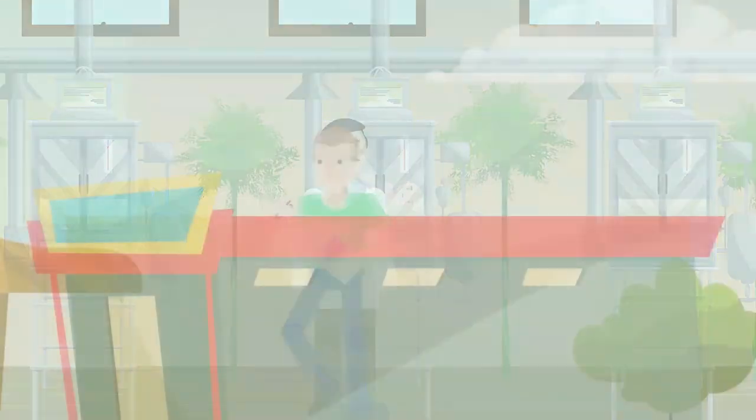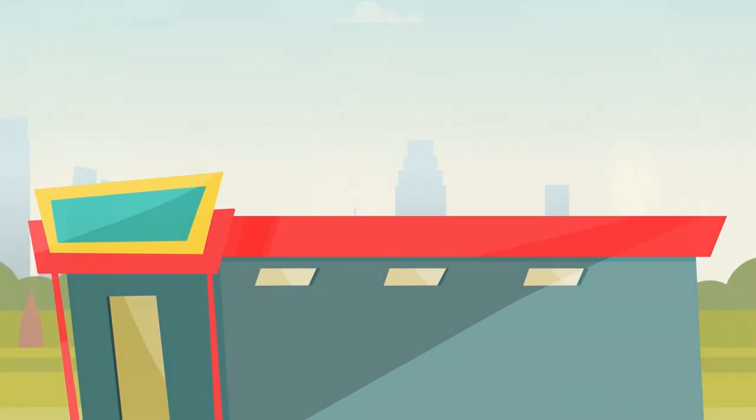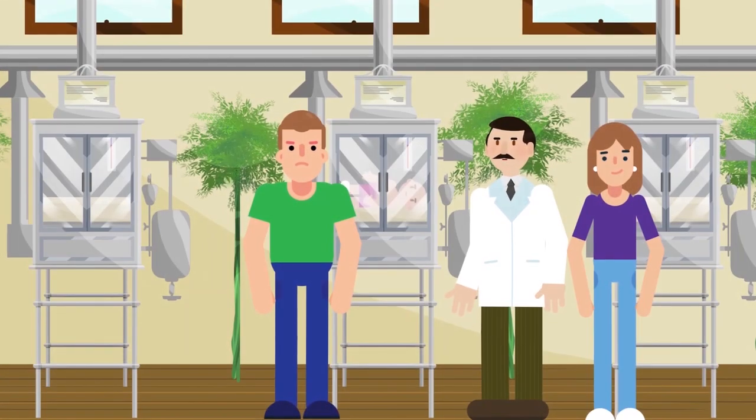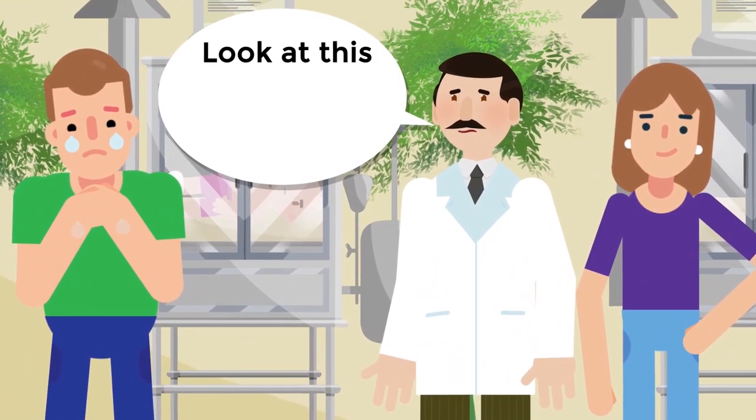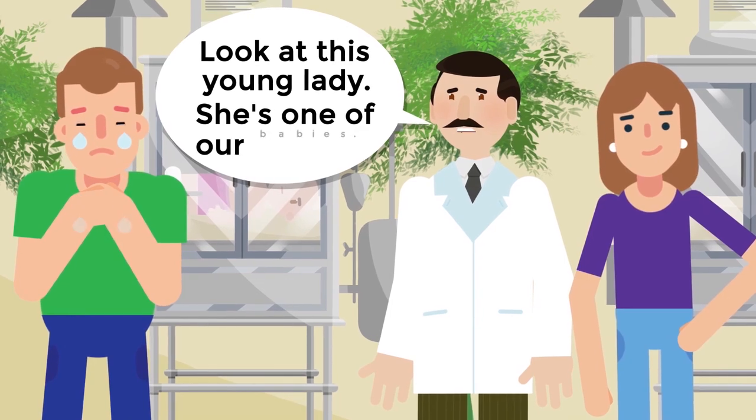Years later, the girl returned to the hatchery and introduced herself to her savior. Then, Martin brought her to one of the other fathers, who was observing his own child. Look at this girl. She is one of our children, and your child will grow up just like this, said Cooney.